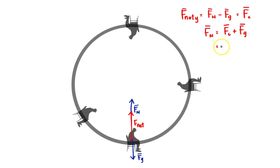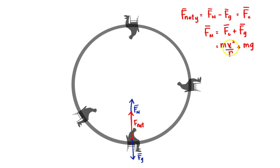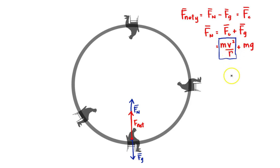My normal force is equal to mv²/r plus mg. If I know the radius and the speed at which I'm moving around the circle, I can find the centripetal force and add it to my force of gravity. This extra piece is what provides the feeling while I'm sitting in my roller coaster — why I feel like I'm suddenly being pressed down into my seat. This is why my normal force is so much bigger.